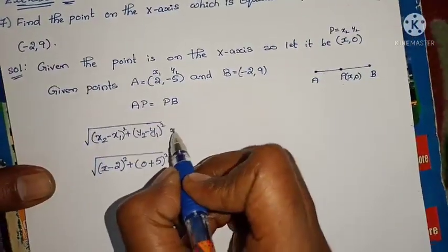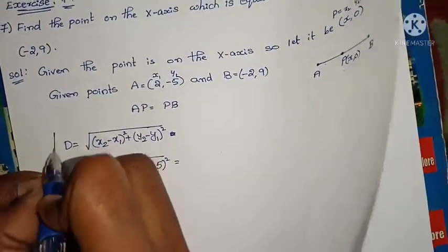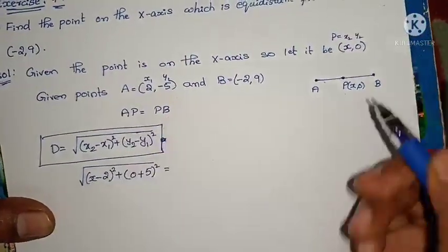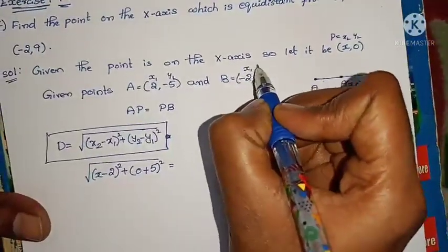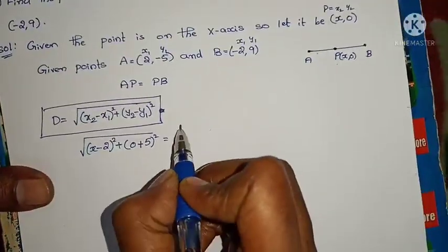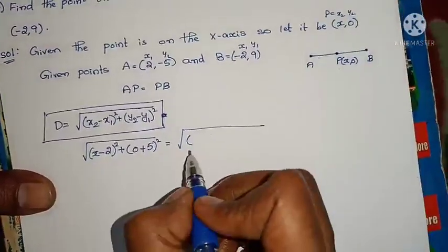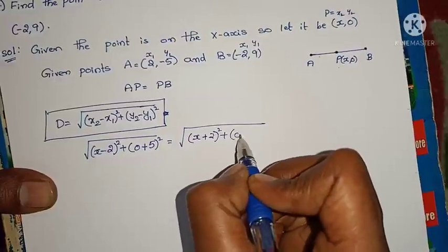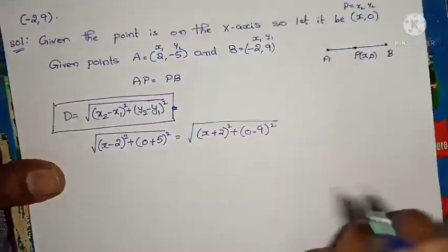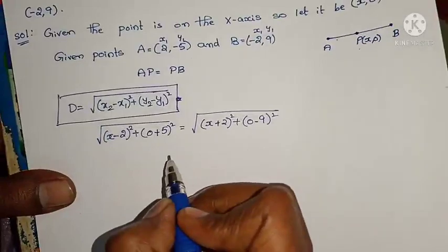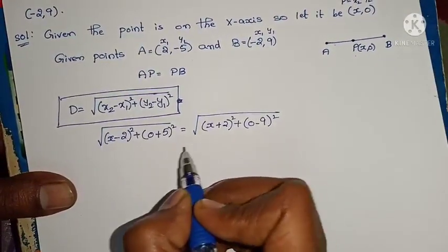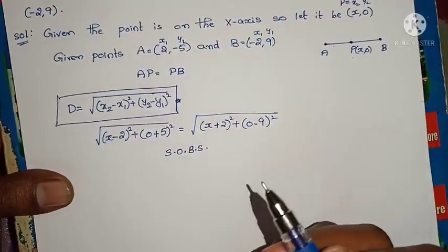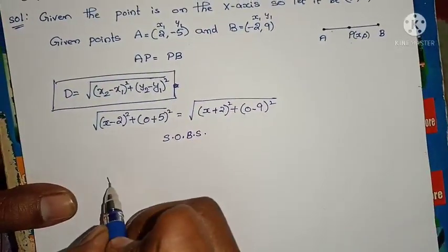Now for PB, take B as x2, y2 and P as x1, y1. The formula is root of (x2 minus x1) whole square plus (y2 minus y1) whole square. Now on both sides there is a root. What we can do? Squaring on both sides — if we square both sides, the roots will be cancelled.